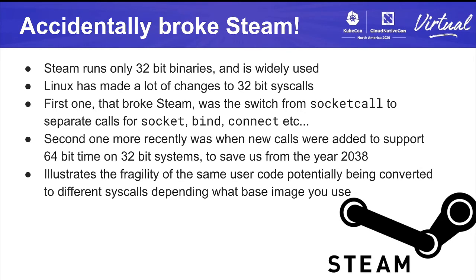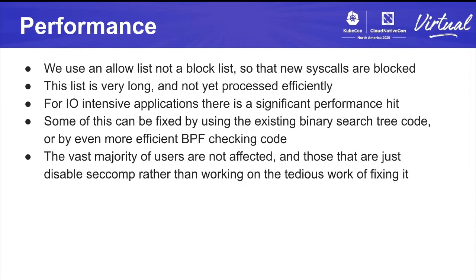This highlights a fragility issue with Seccomp: because it requires exact syscall lists, when some new set of syscalls that everyone starts using comes along, you really have to update the code quickly, which is really problematic. Apologies to Steam users. There's also a performance issue — there are a lot of rules because we list the syscalls you can use rather than the ones you can't, and the list is very long and not processed terribly efficiently. Only really I/O-intensive applications will notice this, and a few people who have complained have generally just disabled Seccomp rather than fixing it.